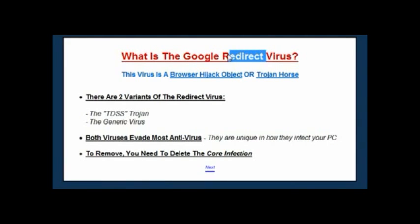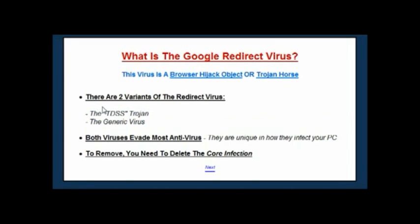One of the key things with this virus is most people see it when they go on search engines or search Google, but it actually affects all redirections that your internet connection will handle. When you browse the internet, Windows will continually redirect various pages online to different pages because websites either close down or change pages. There's actually a setting inside Windows itself which handles those redirect requests. What these viruses do is either change the settings that handle the redirects, or they create a file which injects their own link instead of the correct redirect link.